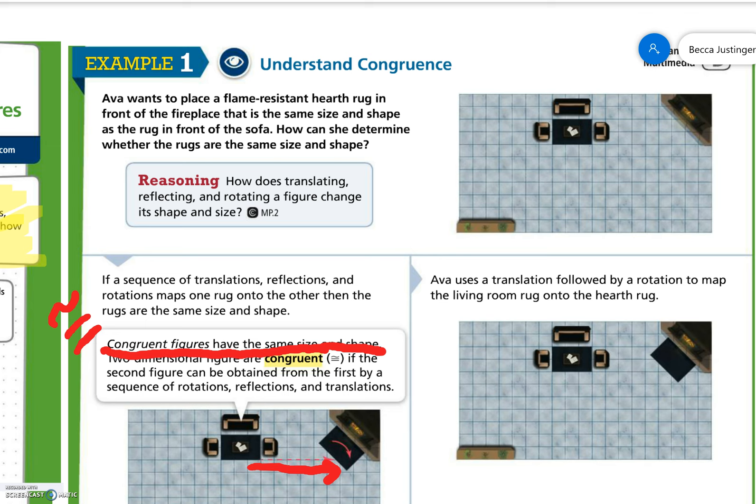Oh, why do I always do that? I'm not sure where that cut off. I'm just going to start reading the definition again. Congruent figures have the same size and shape. Two-dimensional figures are congruent. This is the symbol for congruent. It's an equal sign with a tilde on the top or squiggly. If the second figure can be obtained from the first by a sequence of rotations, reflections, and translations.